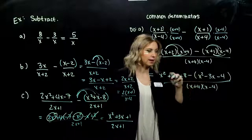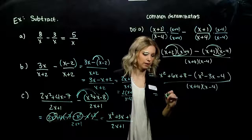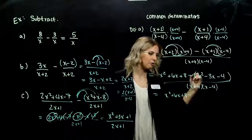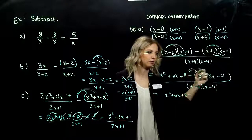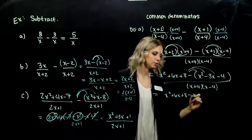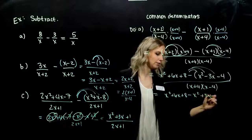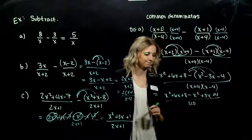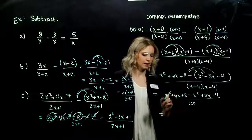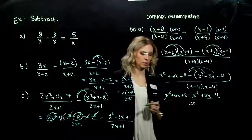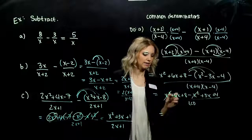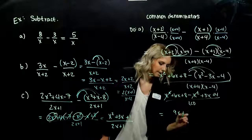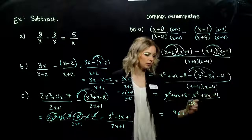Let's start distributing and combining our like terms. I've got x squared plus 6x plus 8, and now every single sign in there is going to change when I get rid of those parentheses: negative x squared, positive 3x, positive 4 — all over the LCD. And combining those terms: x squared minus x squared will be gone. I've got 6x and another 3x, so that will give me 9x. And 8 and 4 gives me 12.